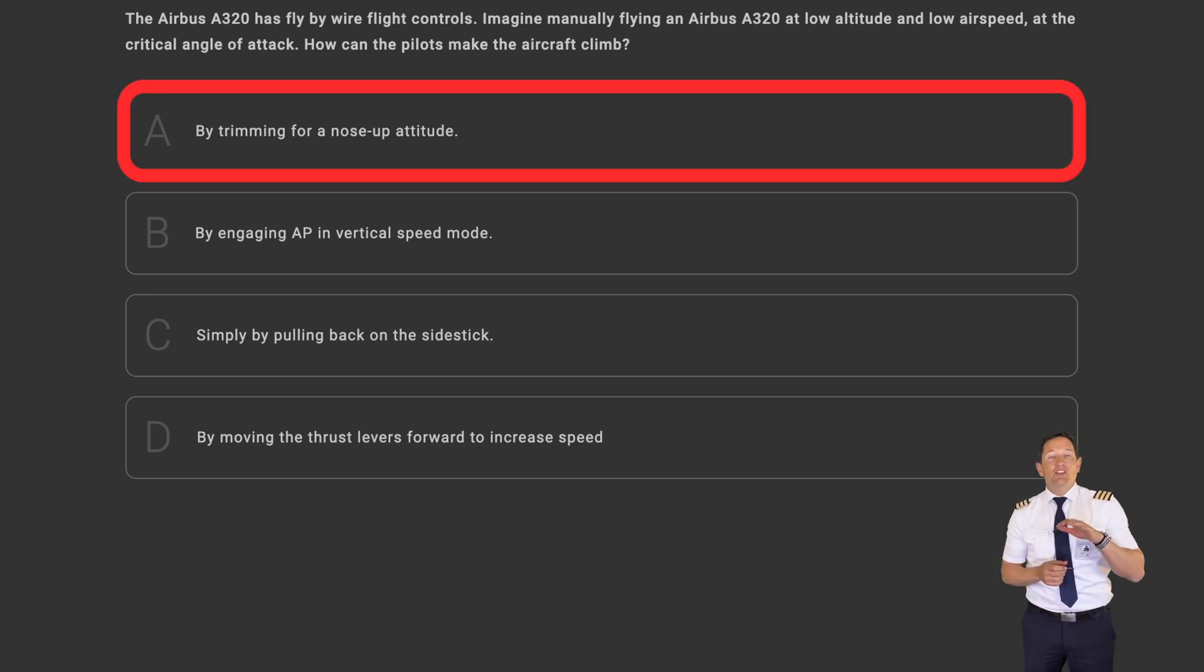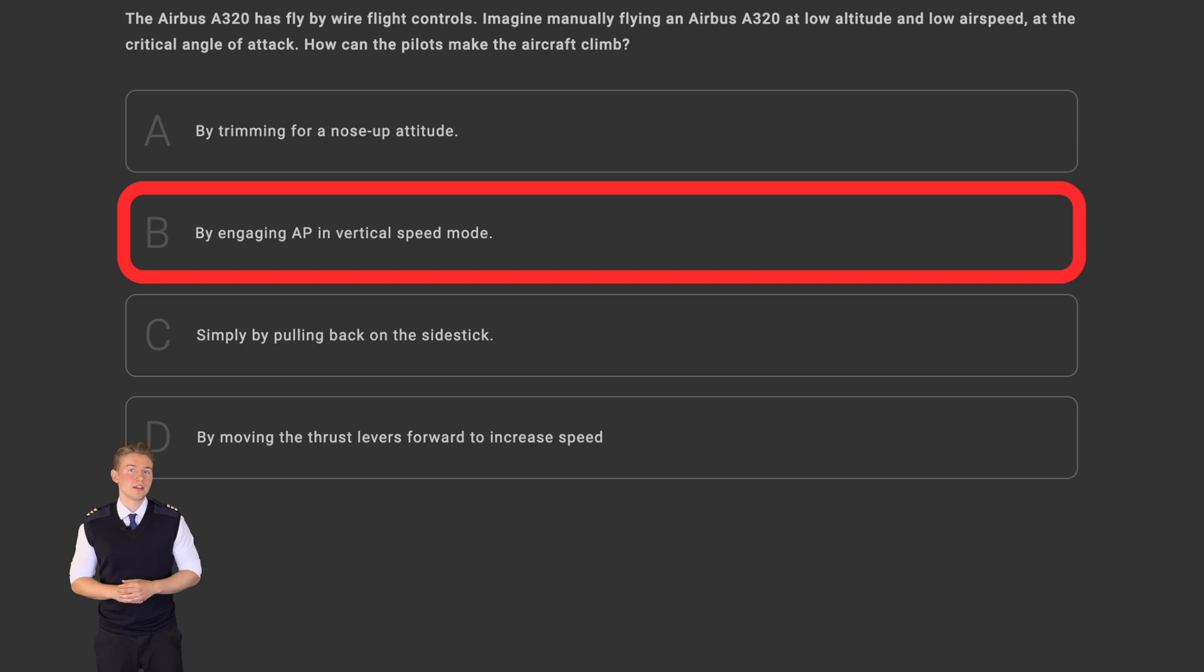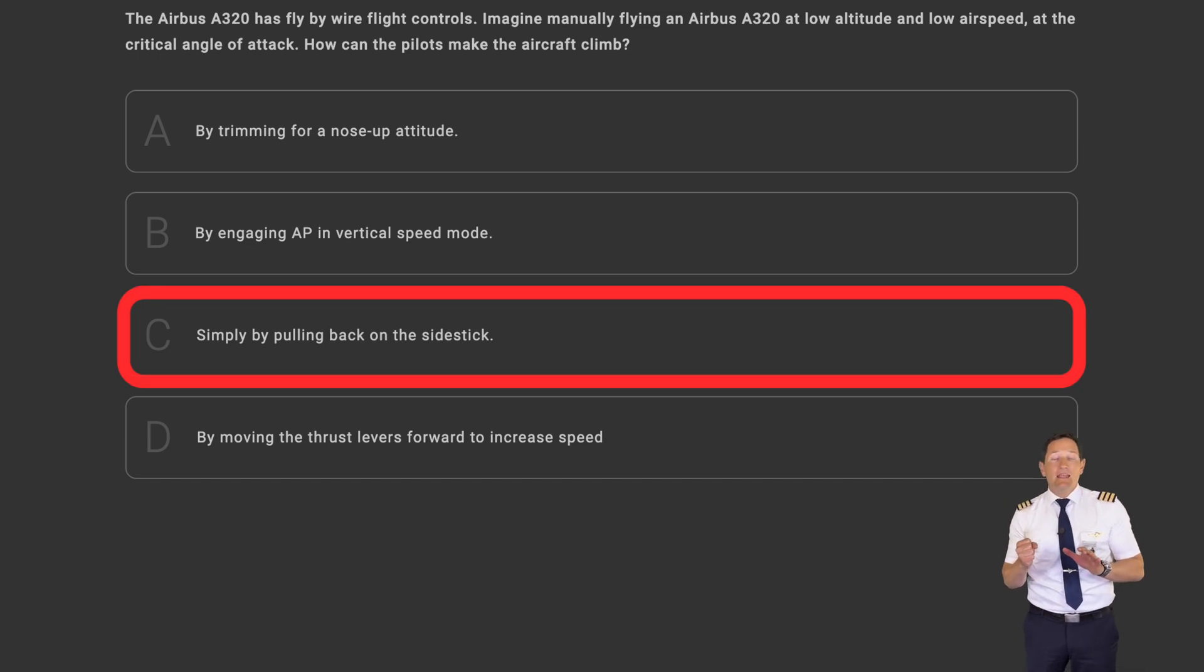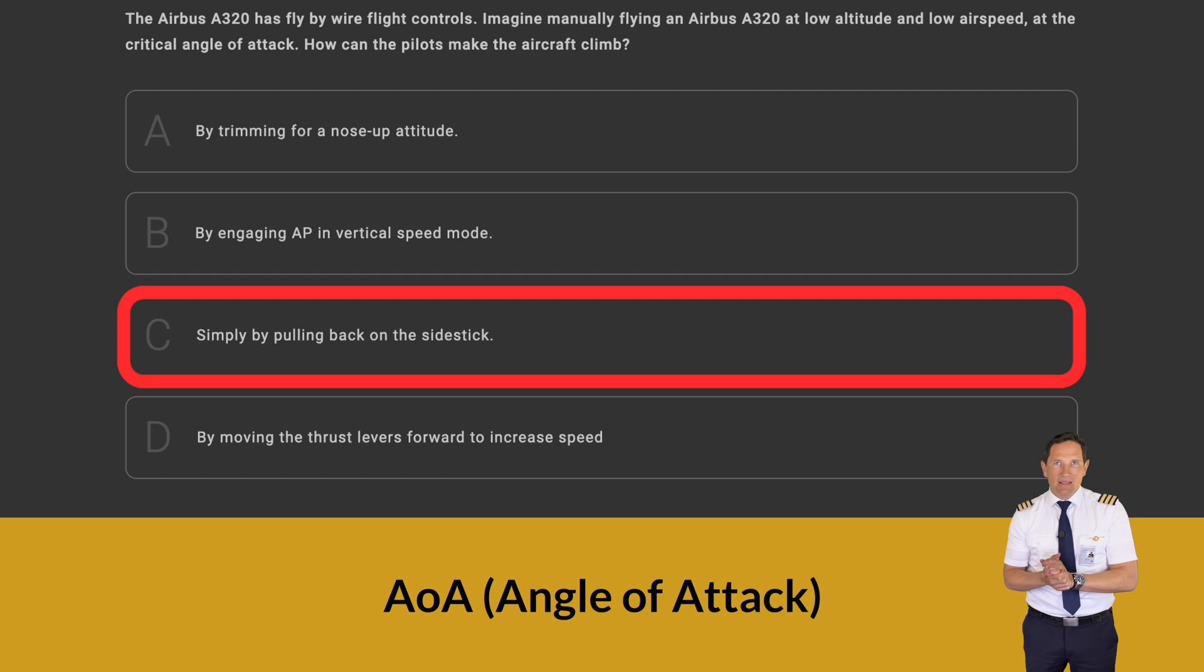Answer A: Trimming changes the aerodynamic balance but does not increase the thrust or airspeed. At the critical angle of attack, trimming nose up can increase the risk of a stall as the AOA is increased. Answer B: By engaging the autopilot in vertical speed mode without sufficient airspeed or thrust and the other thrust disengaged can result in an insufficient climb rate or even a stall. The autopilot also requires adequate thrust to maintain commanded climb rates. Answer C: Pulling back on the sidestick increases the pitch attitude and AOA. At the critical AOA, this action risks pushing the aircraft into a stall.